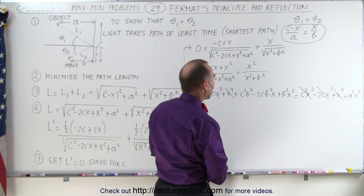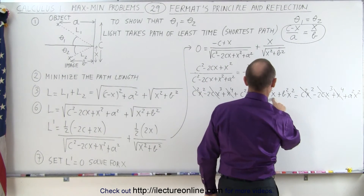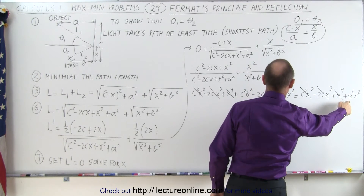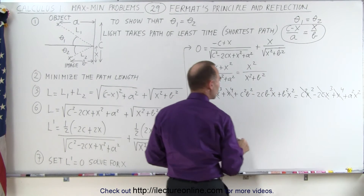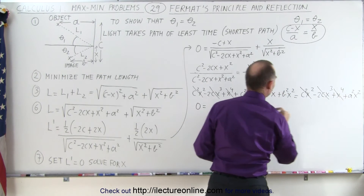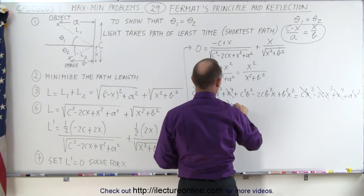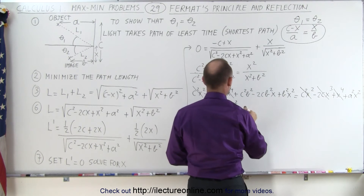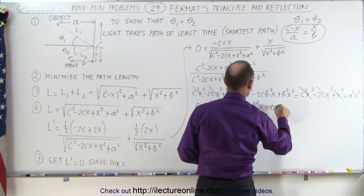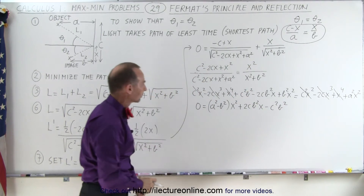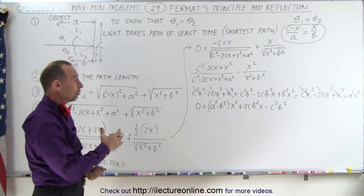We're left with: c squared b squared minus 2cb squared x plus b squared x squared on the left equals a squared x squared on the right. Moving everything to one side gives us 0 equals (a squared minus b squared) times x squared plus 2cb squared x minus c squared b squared. So now I have a quadratic equation which I can solve for x.